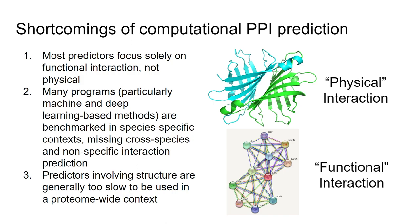Another issue: many programs were trained and tested in species-specific contexts. If you wanted cross-species or purely protein-based classification, those algorithms weren't tested for that. Finally, many structure-based predictors were too slow for proteome-wide contexts or had unreasonable resource requirements.